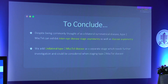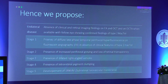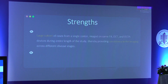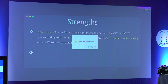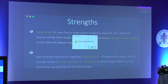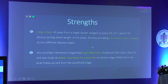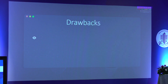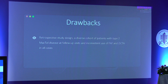To conclude, despite being commonly thought of as a bilateral symmetrical disease, type 2 MacTel can exhibit inter-eye disease stage asymmetry as well as disease asymmetry. We also added a unilateral type to MacTel disease as a separate stage which needs further investigation, and we propose a new staging incorporating this unilateral disease. The strengths of our study were a large cohort from a single center, ensuring consistency in imaging and allowing longitudinal data assessment. The main drawback was its retrospective nature, so not all follow-up visits could be assessed.